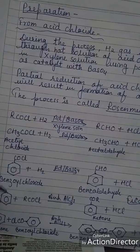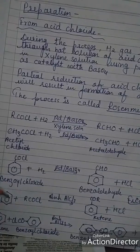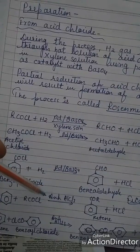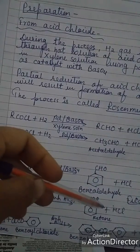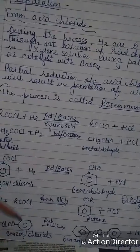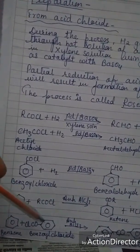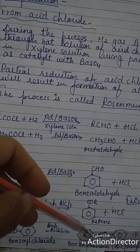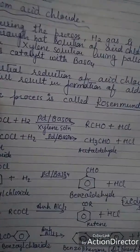Now let us talk about the preparation of ketones. In this case, benzene and acid chloride are taken in the presence of anhydrous AlCl3, which will give a ketone plus HCl. Here is an example of the preparation of benzophenone: benzene is treated with benzoyl chloride in the presence of anhydrous AlCl3, giving diphenyl ketone, that is benzophenone, plus HCl.